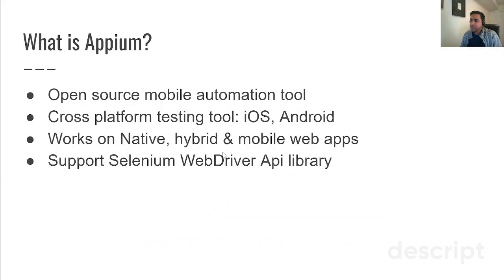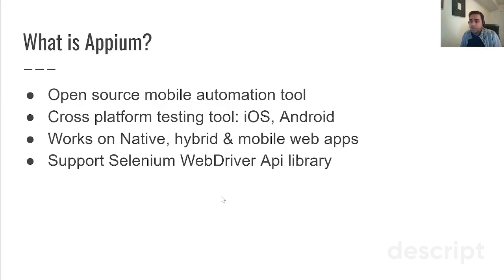Appium is an open source mobile automation tool, meaning it's free of cost and anyone can use it for personal or commercial purposes. It is a cross-platform testing tool, meaning it works on different operating systems — it works on iOS apps, Android apps, and even Firefox OS.